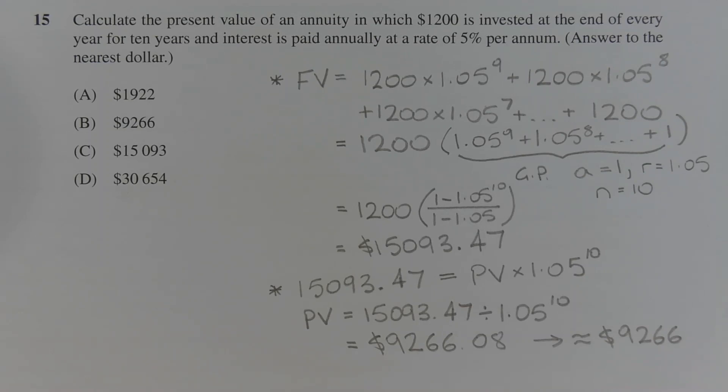It's going to earn 5% per annum compounded over a period of 9 years. So the future value of the first contribution of $1,200 is 1,200 times 1.05 to the power of 9.